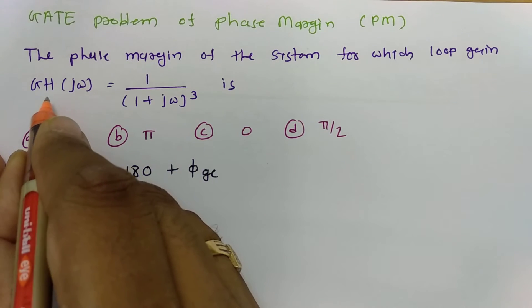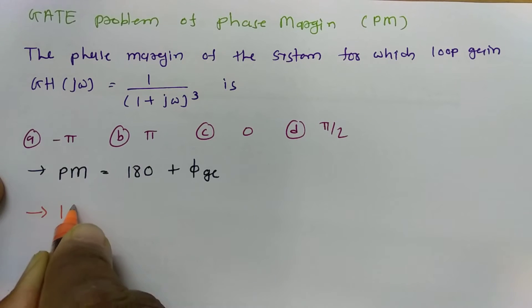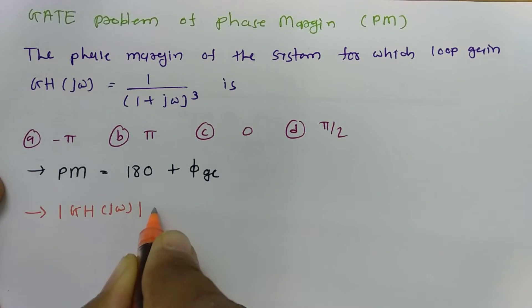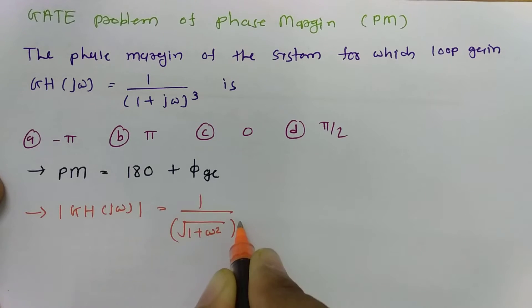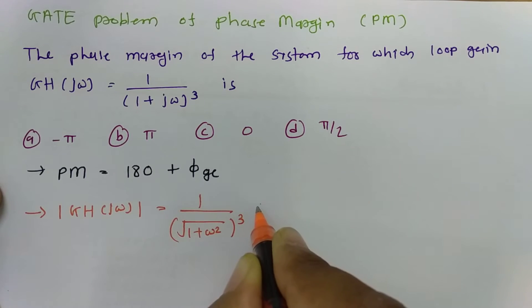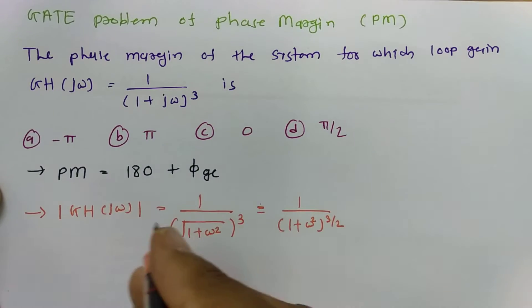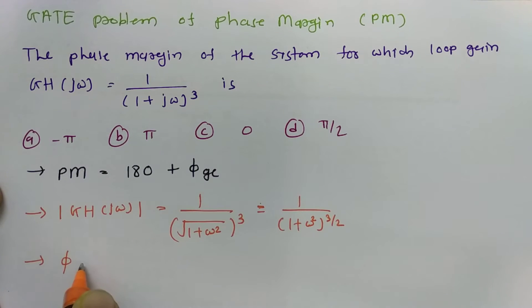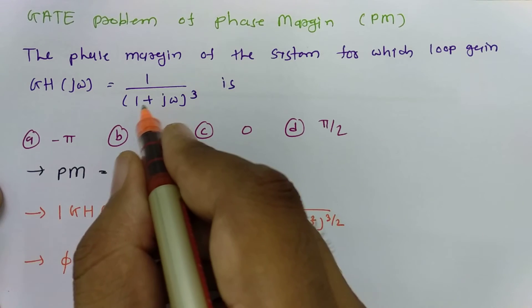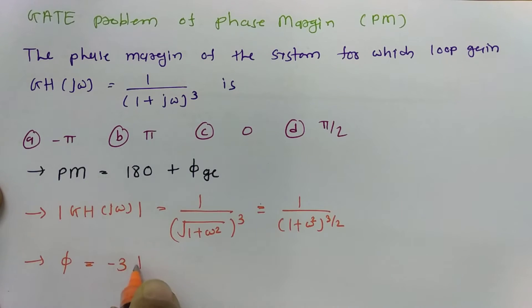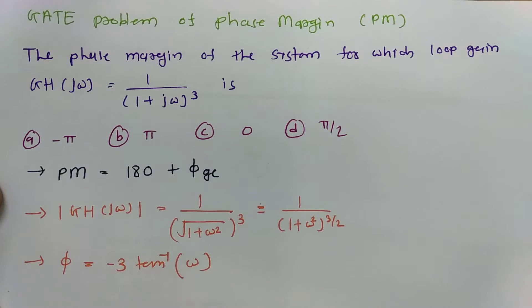Since GH(jω) is given, let us find the magnitude and phase. The magnitude |GH(jω)| equals 1 divided by (1 + ω²) raised to the power 3/2. For the phase φ, there are 3 poles at ω = 1, so the phase is minus 3 times tan⁻¹(ω/1), which simplifies to −3·tan⁻¹(ω).